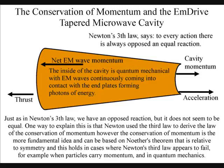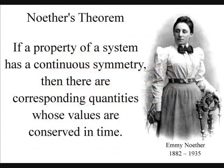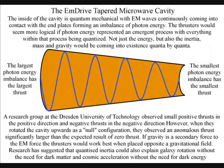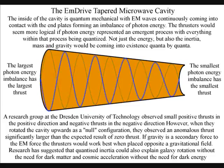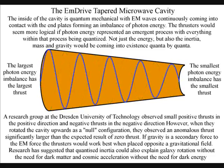This can seem very odd because, just as in Newton's third law, we have an opposite reaction but it does not seem to be equal. One way to explain this is that Newton used the third law to derive the law of the conservation of momentum; however, the conservation of momentum is the more fundamental idea and can be based on Noether's theorem, which is relative to symmetry. This holds in cases where Newton's third law appears to fail — for example when particles carry momentum and in quantum mechanics. The inside of the cavity is quantum mechanical, with electromagnetic waves continuously coming into contact with the end plates forming photons of energy.